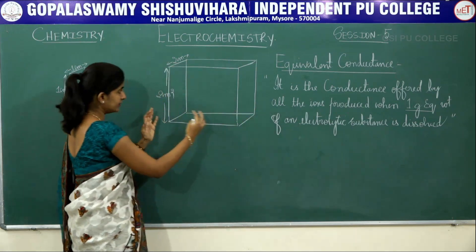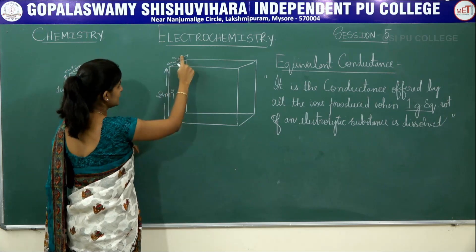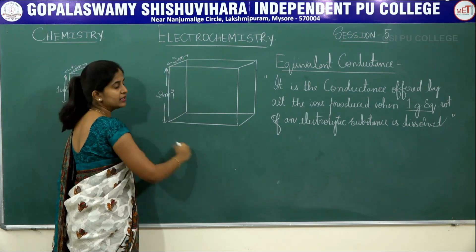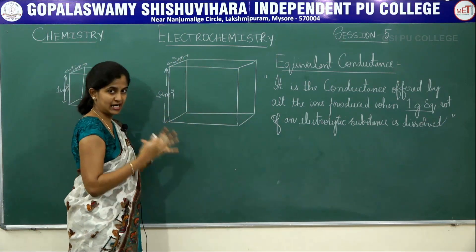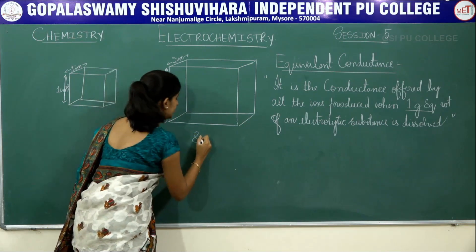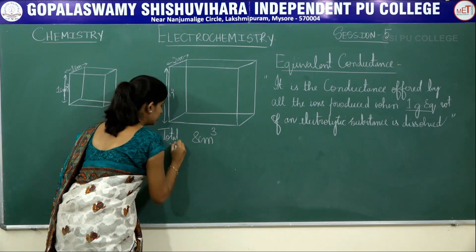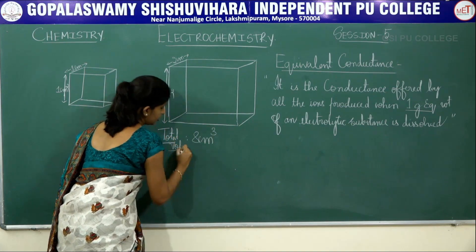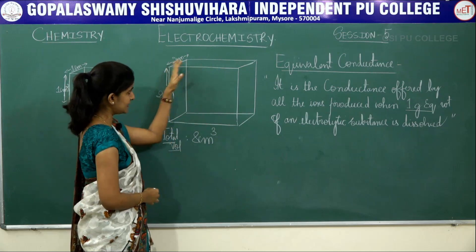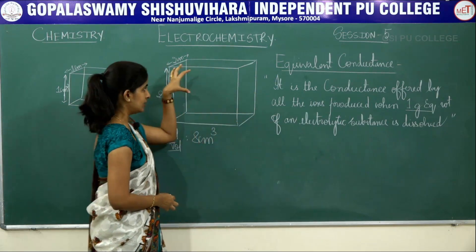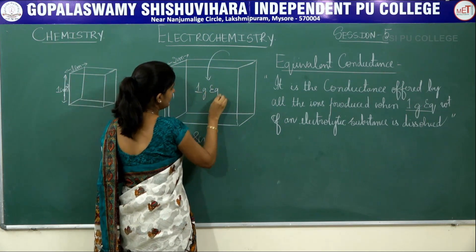In the first box, think of it as a cube whose total area is 2 cm by 2 cm by 2 cm, so the total volume is 8 cm cube. This is a box filled with electrolyte whose total volume equals 8 cm cube. Into this 8 cm cube of water or aqueous electrolyte, I have dissolved 1 gram equivalent weight of an electrolyte.